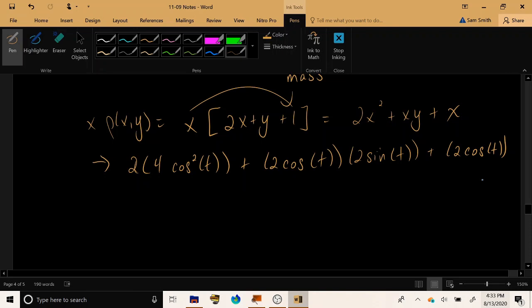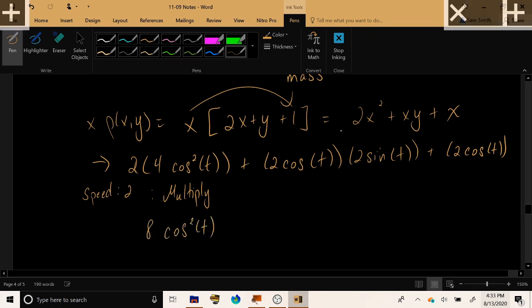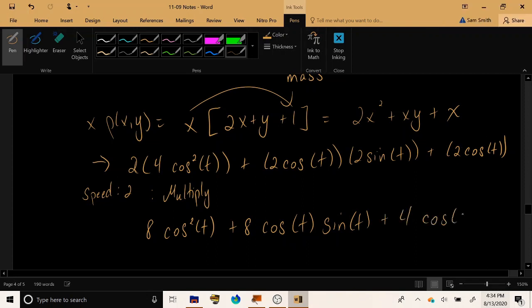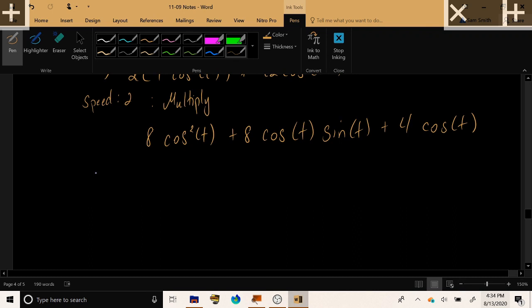Multiply by the speed which we recall was 2 and we get 2 times 2 times 4, 8 cosine squared t, 2 times 2 times 2 another 8 cos t sine t, and then finally 2 times 2 cos t we have 4 cos t. So then, to find the moment around the y axis we would integrate as t goes from 0 to pi this quantity.